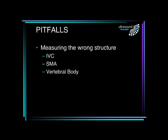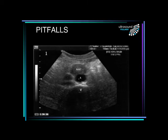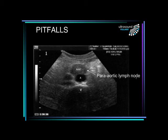So what are the pitfalls of this technique? The biggest thing you have to be concerned about is measuring the wrong structure. If you measure the IVC, it doesn't dilate much, so you'll get a normal measurement. I've seen somebody say they had excluded an aneurysm when in fact they had measured the IVC. Similarly, there are reports of people measuring the superior mesenteric artery, and even measuring the vertebral body. From the literature, there is one report of somebody who felt this was a thrombus within the aneurysm, but it was actually a para-aortic lymph node — though that's a very uncommon set of circumstances.